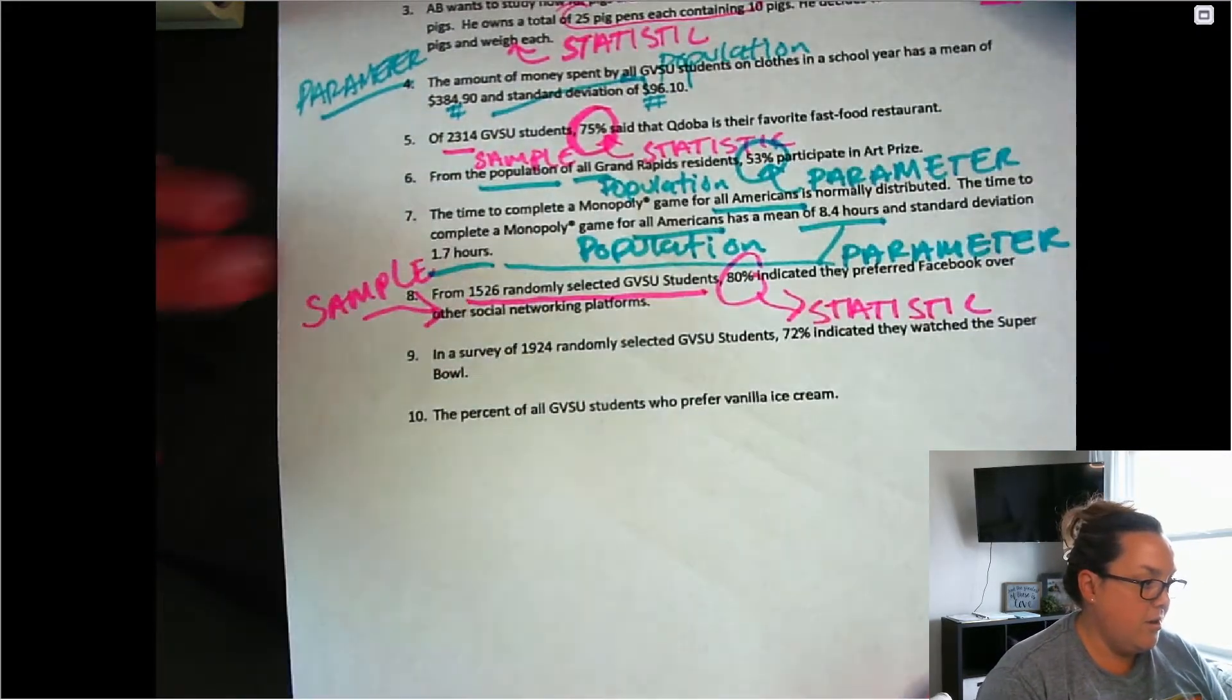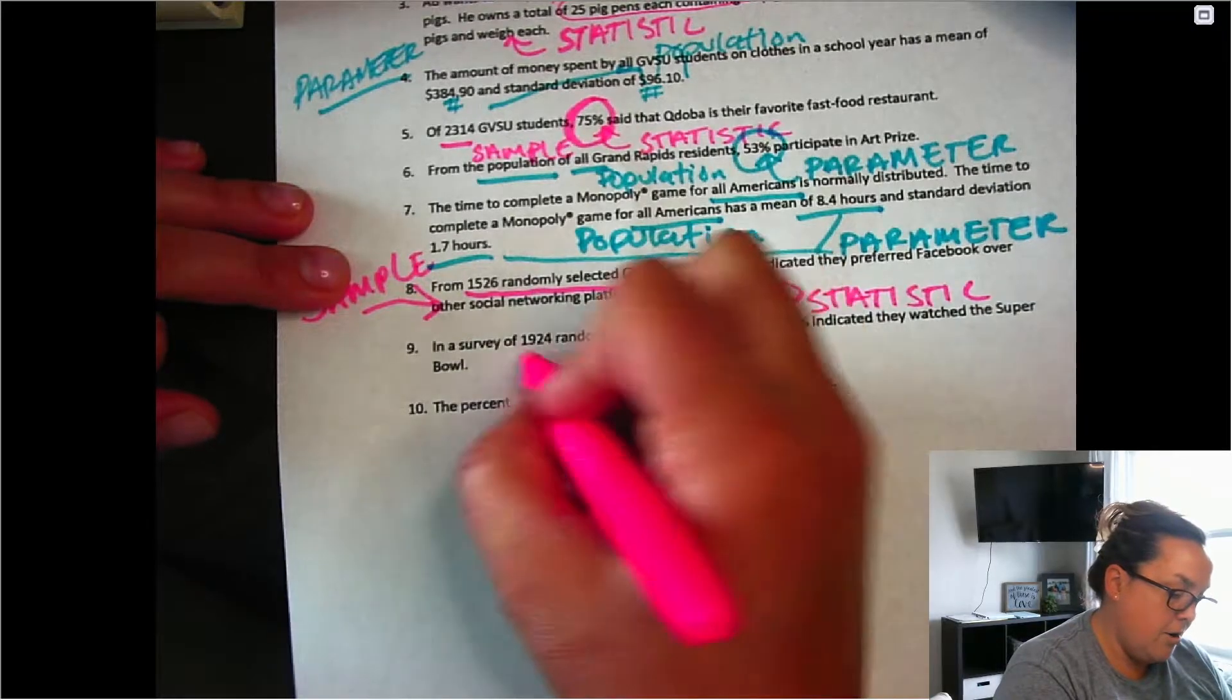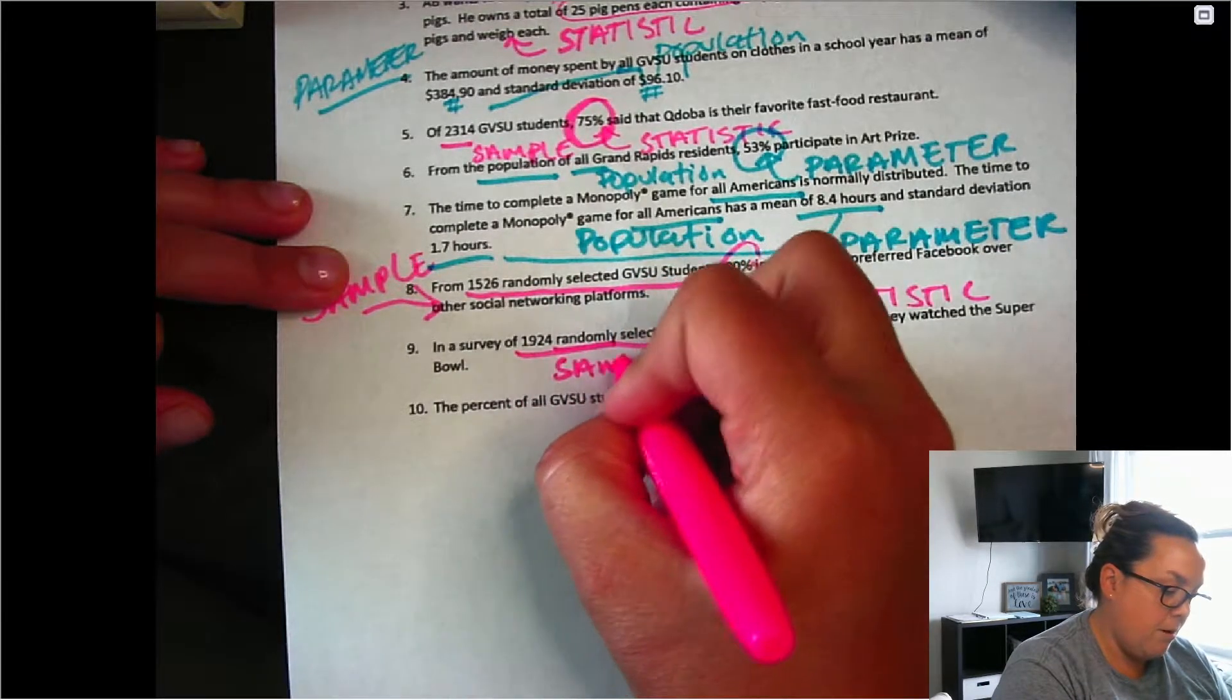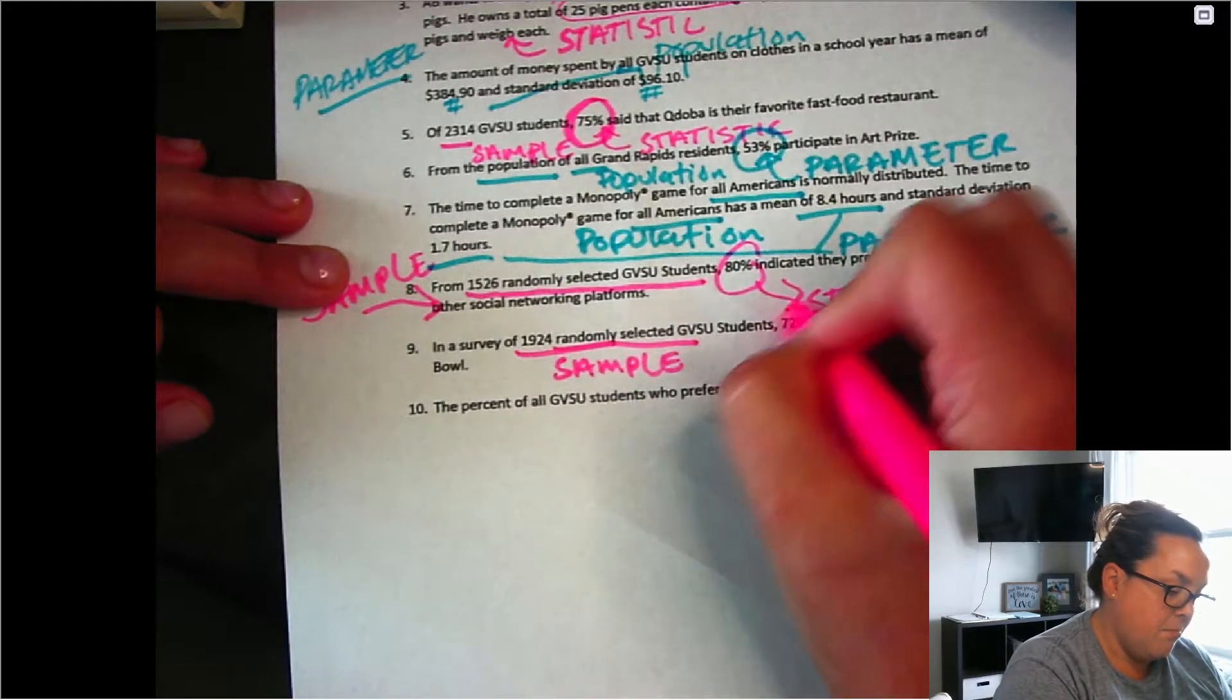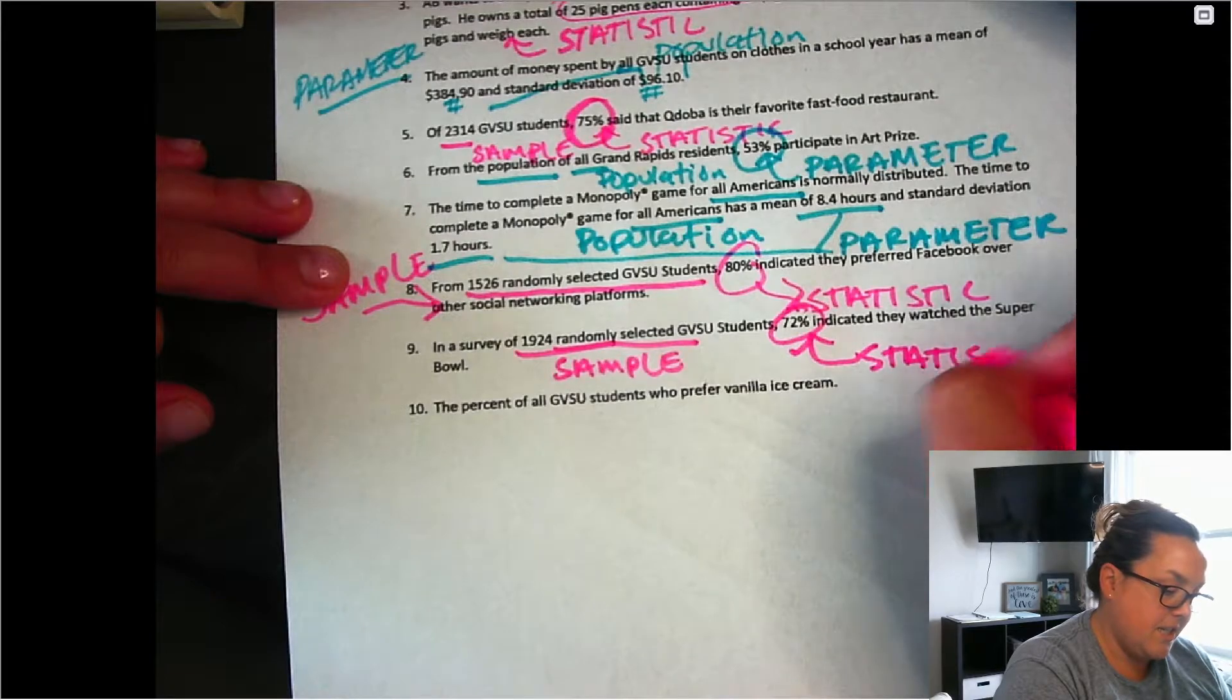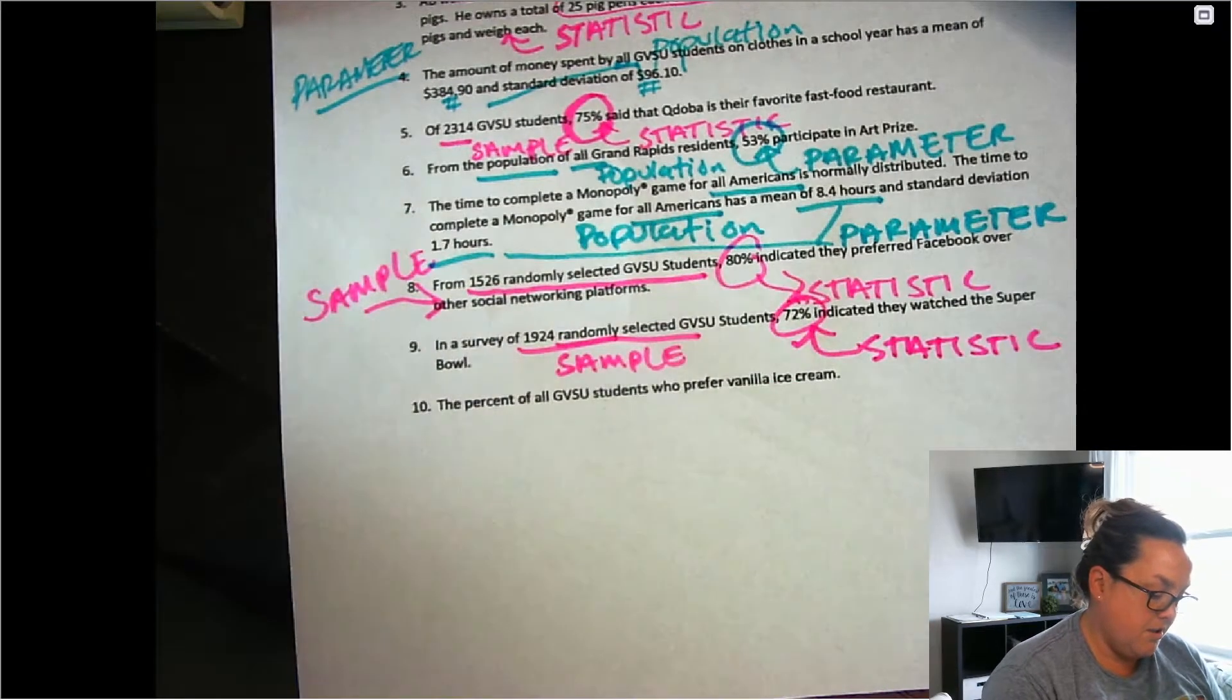Next, we have a survey of 1,900 randomly selected. That means that's smaller than the population. So that's a sample. So this number here is a statistic. It's referring to the smaller.